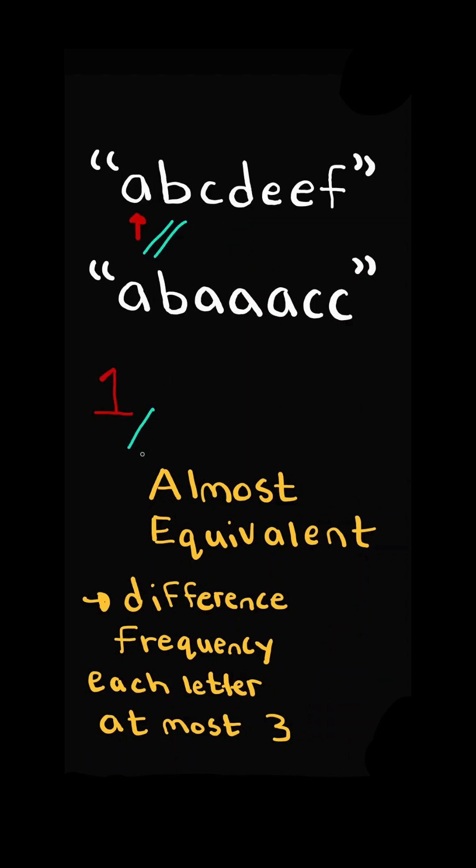For example, string 1 has 1a and string 2 has 4as and the difference is at most 3. Again, string 1 has 1b and string 2 has 1b and the difference is at most 3. And we continue checking the rest of the characters.